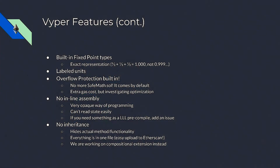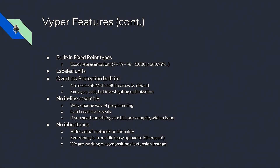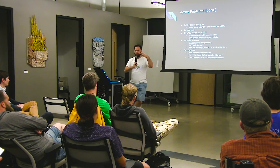We don't allow inline assembly because that's a really opaque way of programming and it's really hard to understand when auditing a contract. But if you have a specific function that's general enough — things like EC recover or other widely-used functions — we'll investigate adding it as either a pre-compile or a built-in feature. Come add an issue to our repo. We also don't allow inheritance, because it hides a lot of functionality behind layers of contracts across different files and pollutes the namespace. As a bonus side effect, everything's in one file for direct upload to Etherscan, which will make it a lot easier than with Solidity where you have to combine everything into one file.